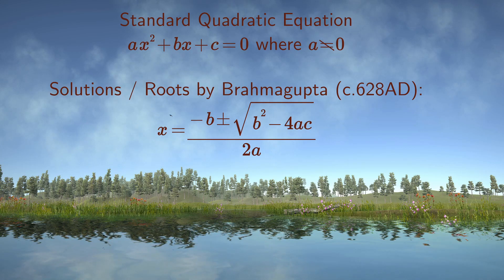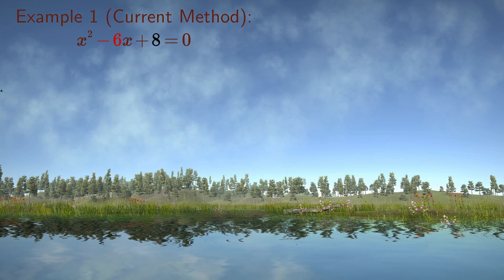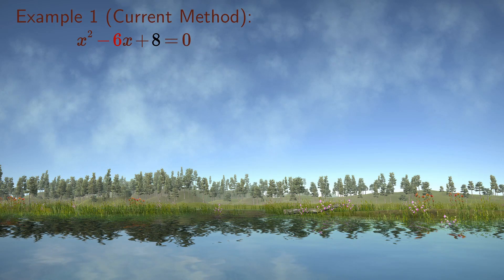Let's take as first example x squared minus 6x plus 8 equals zero, where a equals 1, b equals minus 6, and c equals 8.